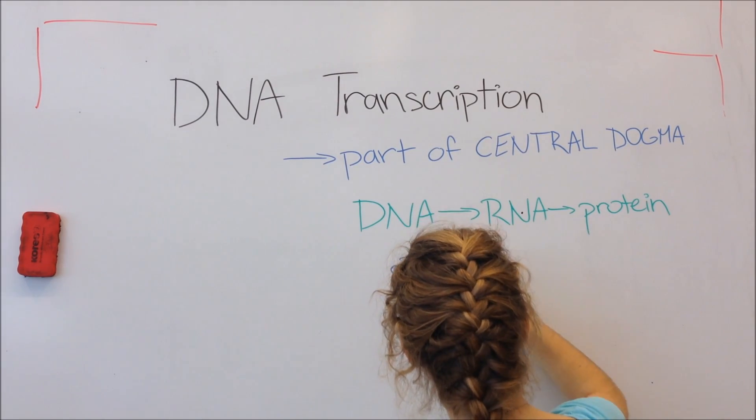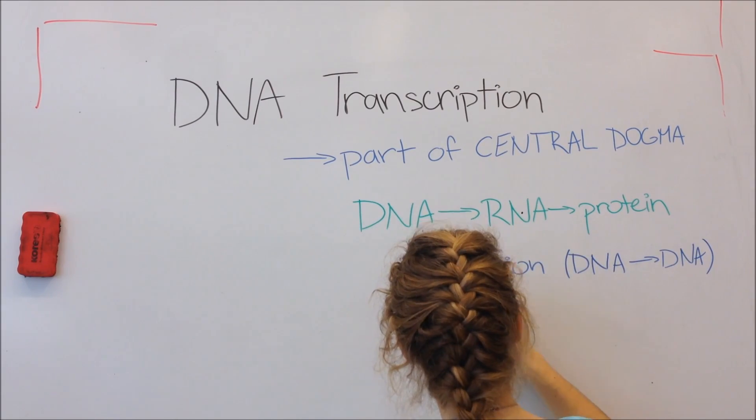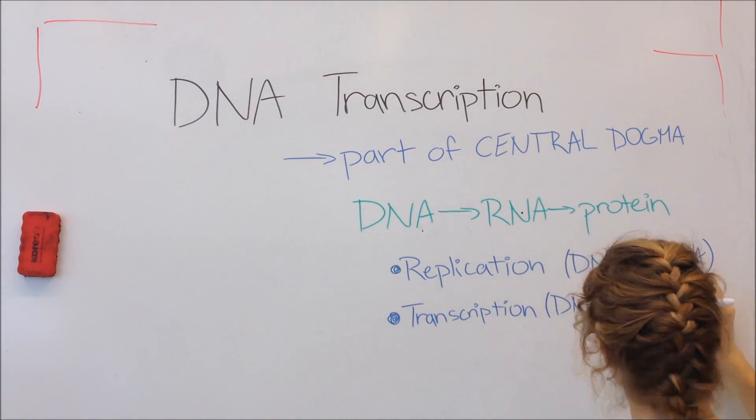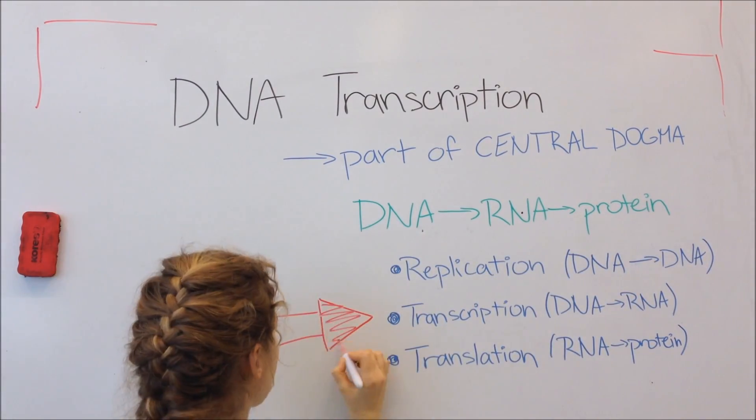The central dogma is divided into three steps: replication DNA to DNA, transcription DNA to RNA, and translation RNA to protein. Today we are going to talk about the second step, which is transcription.